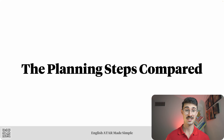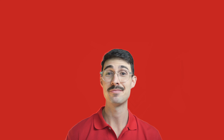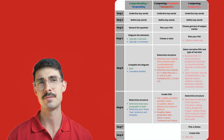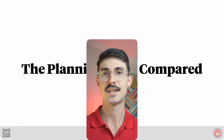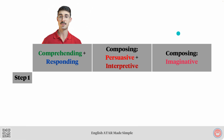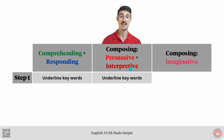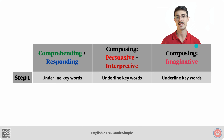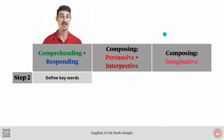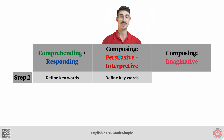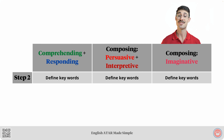Those are our three planning tips. Let's compare the planning steps. There are lots of planning steps in EAMS, but lots of those steps require you to do the same thing. Case in point, step number one: for comprehending and responding section questions, we underline keywords — same thing for persuasive and interpretive questions, same thing for imaginative questions. For step number two, we define the keywords for comprehending and responding, define keywords for persuasive and interpretive, and define keywords for imaginative questions.